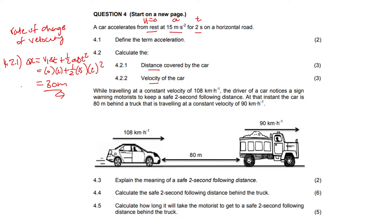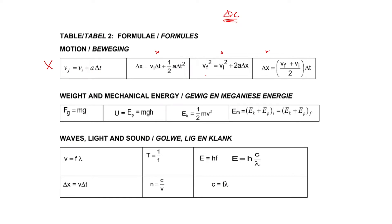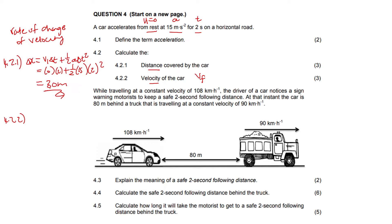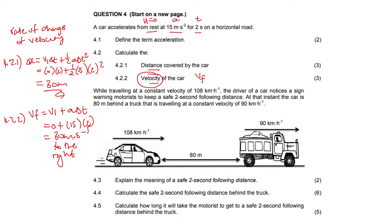4.2.2: What is the velocity of the car? We now have distance, initial velocity, acceleration, and time — so they are obviously asking for final velocity. Choose the easiest formula, which would be the first one: just input initial velocity, acceleration, and time. If you made a mistake in your distance, you can still get full marks here by not relying on the previous answer. Initial velocity was zero, acceleration was 15, time was 2 — and you get 30 meters per second to the right. Remember that velocity is a vector, so you need your magnitude and direction.